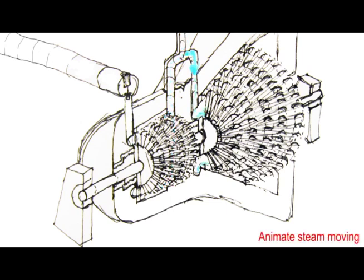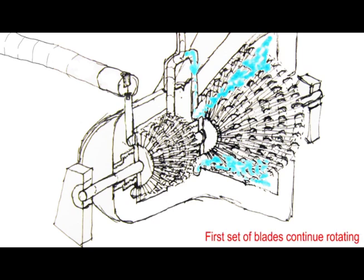The remaining steam that has not been extracted is moved on to the second section of the turbine. The same process that occurs in the first set of blades is repeated here. The only difference is the blades are larger and the pressure is lower.